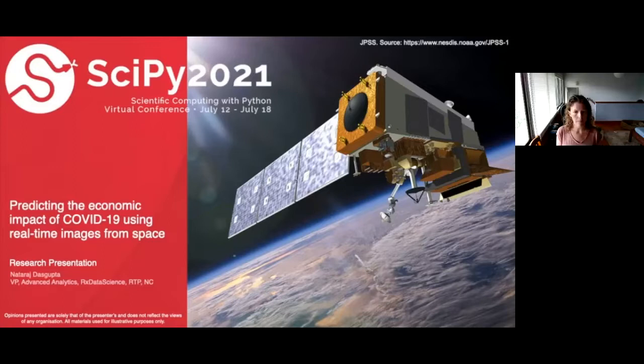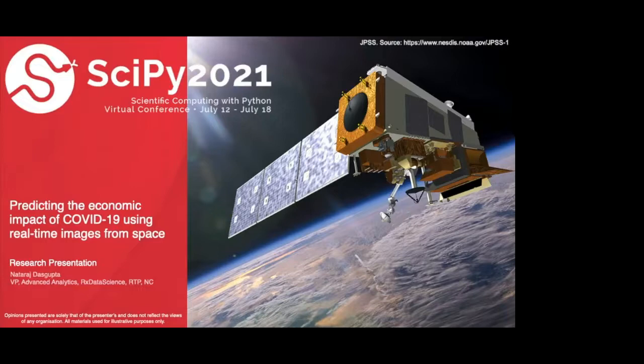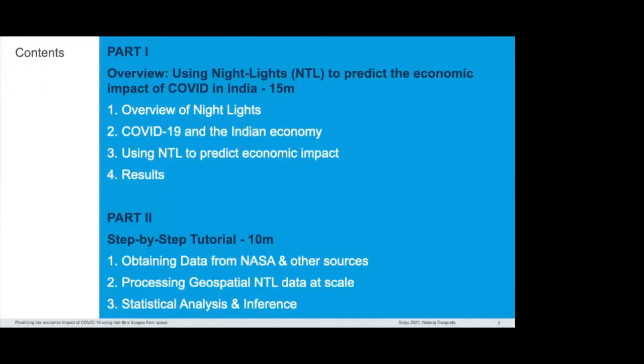Hello, everyone. Welcome to the SciPy 2021 presentation on predicting the economic impact of COVID-19 using real-time images from space. I'm Nataraj Dasgupta, VP of Advanced Analytics at Rx Data Science, a data analytics firm based in Research Triangle Park in North Carolina. This presentation is about how one can use images of Earth's surface at night to estimate economic characteristics such as GDP, and in particular, how these images were used to estimate the GDP impact in India during the COVID timeframe.